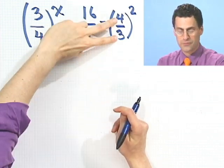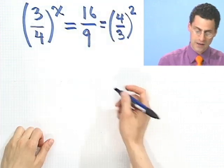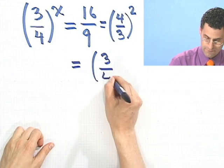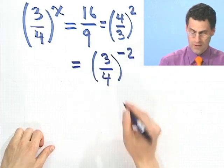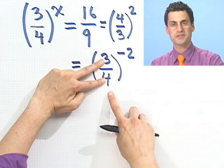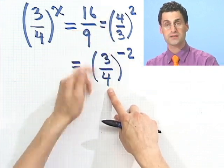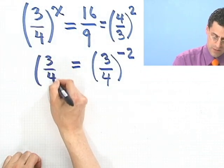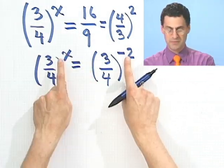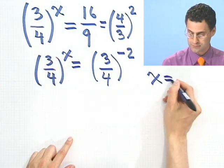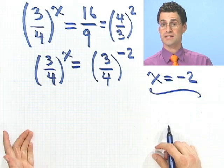So flipping it twice means flip it here and then put a negative sign up there. I flipped it here, but then the negative flips it again. So this comes right back to 4/3. Doesn't change the value. But now I'm in great shape because since the bases are the same, that means the exponents must be the same. So x must equal negative 2.